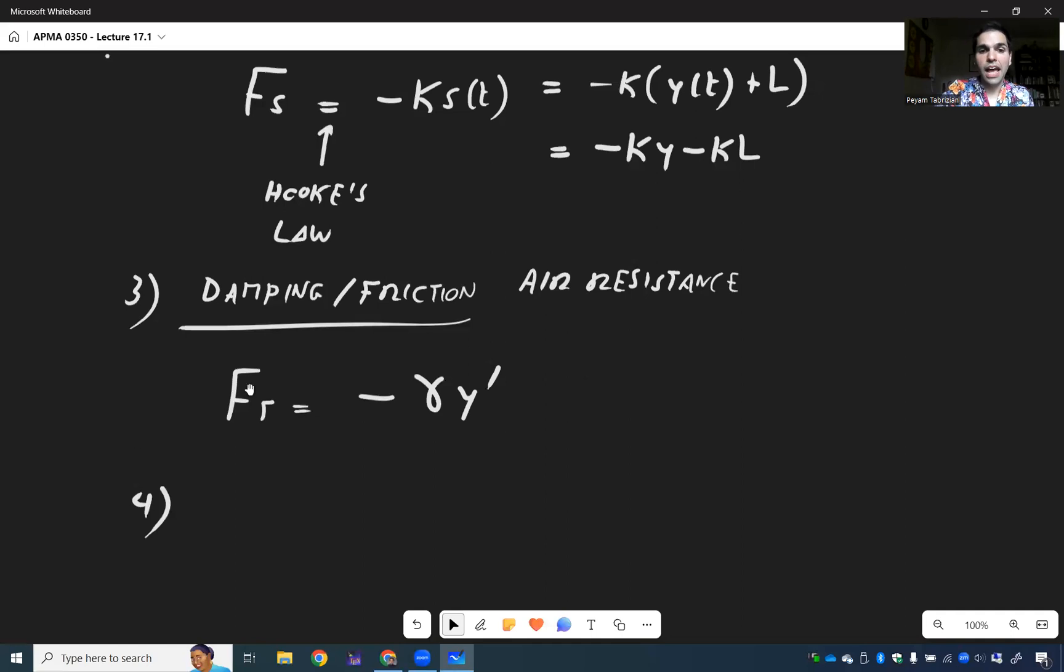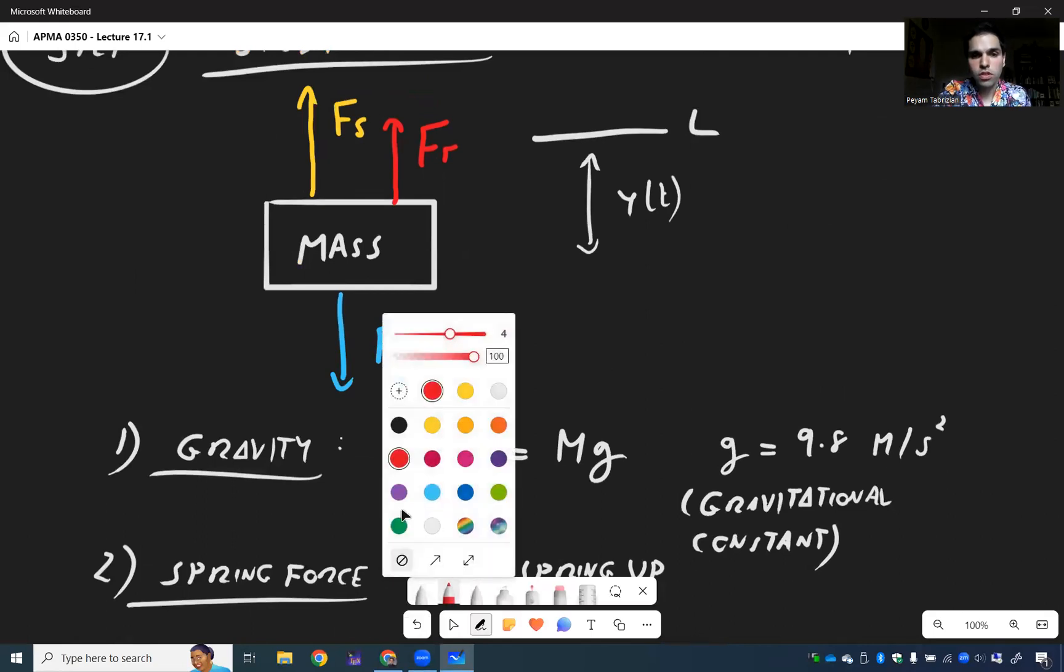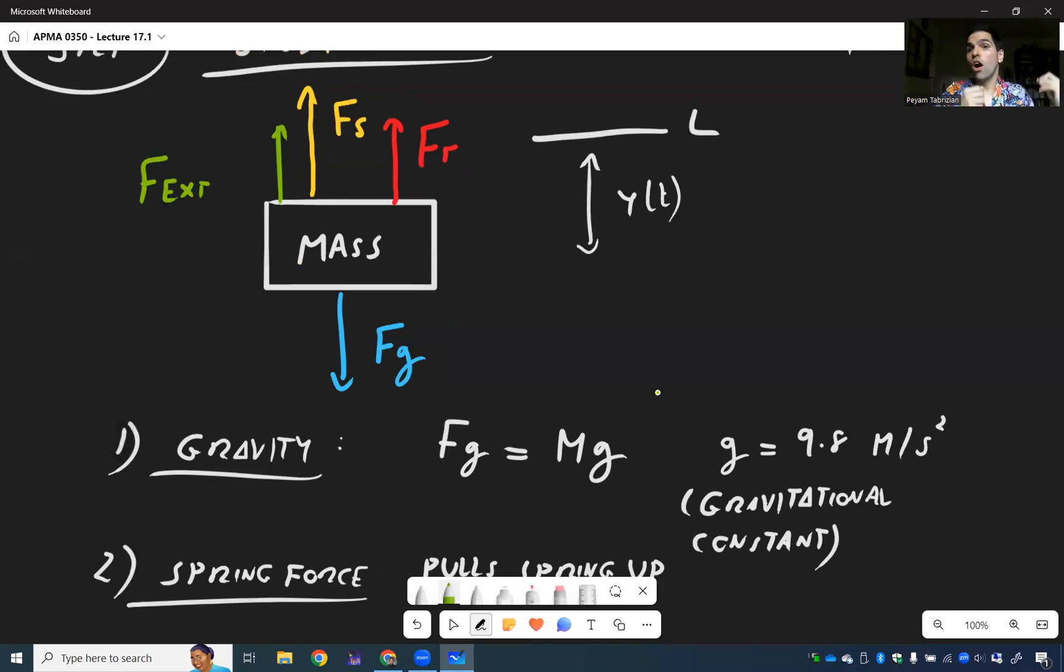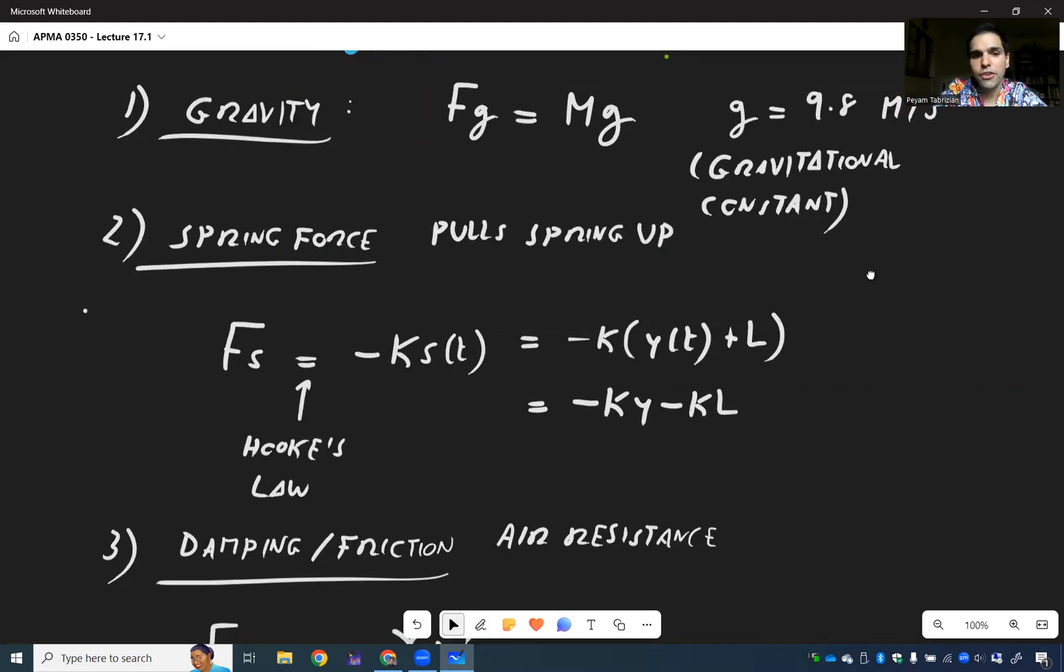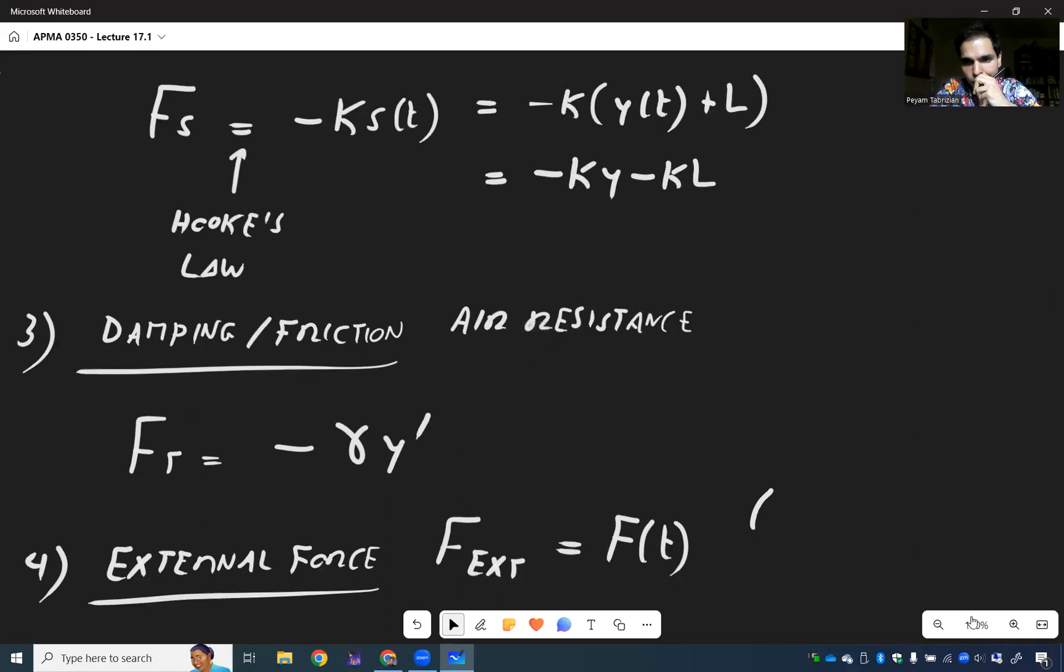And last but not least, as I mentioned, you could add an extra force, which is sometimes called the external force. So F external. Again, it could either go up or down, it depends on the situation at hand. In fact, let me try it going down. Can you imagine your hand pulls stuff down? So F external. Nothing can be really said about it for now, it's just some term f of t.